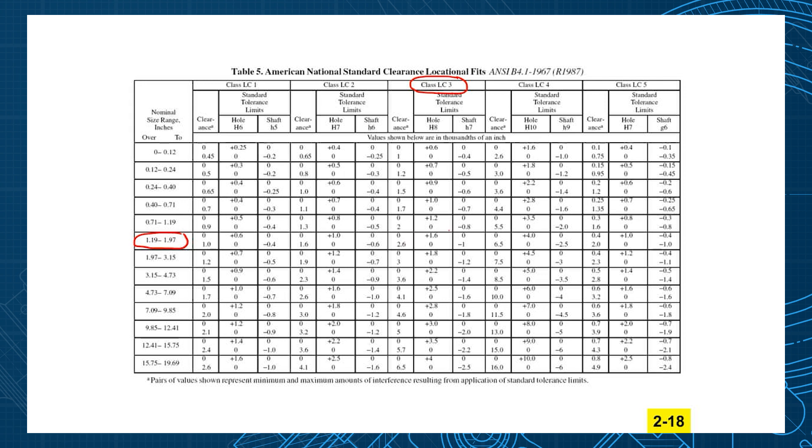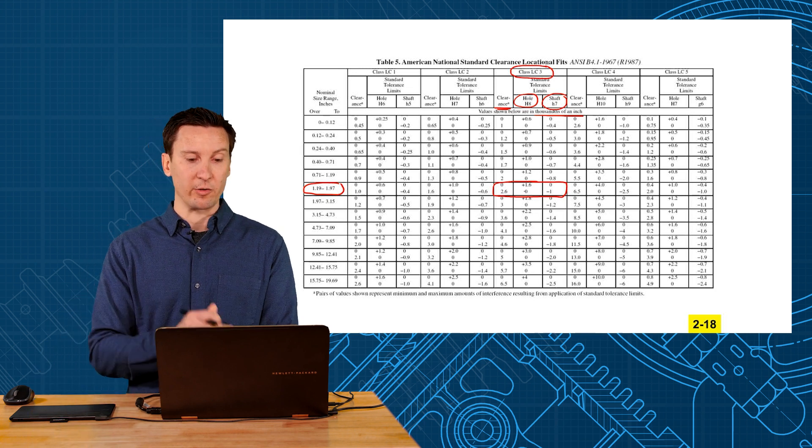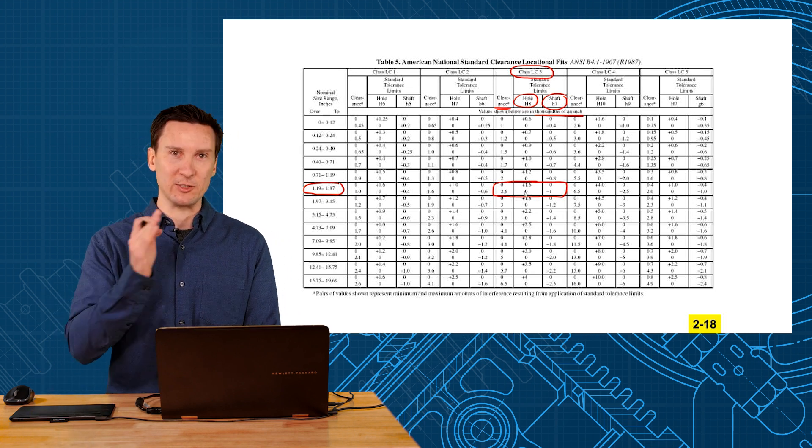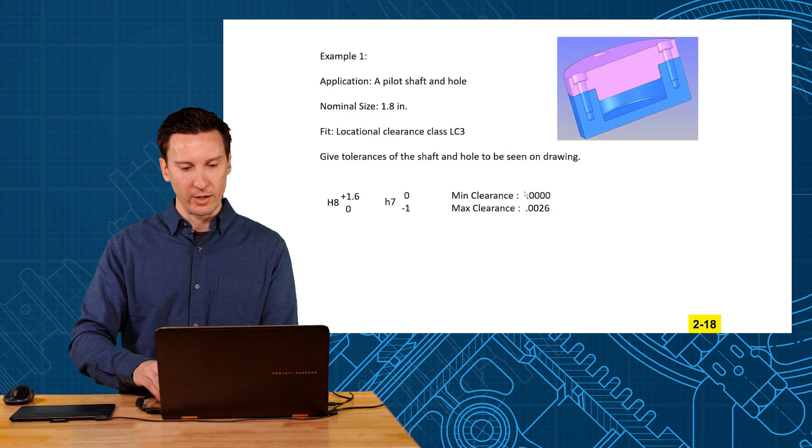Notice that you have information for a hole and you have information for a shaft and that will tell you the minimum clearance. Now these values are going to be in thousandths of an inch. So when they say 1.6 there, that's going to be 1.6 thousandths of an inch times 10 to the negative 3.